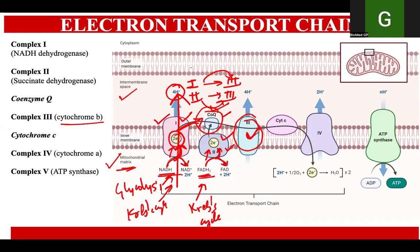When the electrons have reached complex number three, which is cytochrome B, these electrons have to be passed on to the next complex, complex number four, which is cytochrome A. Since these complexes are immobile, there needs to be a shuttle present in between, and that is done by cytochrome C, which takes up the electrons from complex number three and delivers them to complex number four.